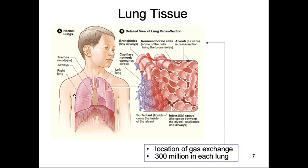The right lung has three lobes and the left has two, because on the left side is where the heart sits, so there needs to be space for the heart. Surfactant is a liquid that coats the inside of the alveoli so there's no water surface tension or pressure that would keep them closed. When we inhale, air rushes in and inflates them, and we don't want any water that's going to keep them sticky.